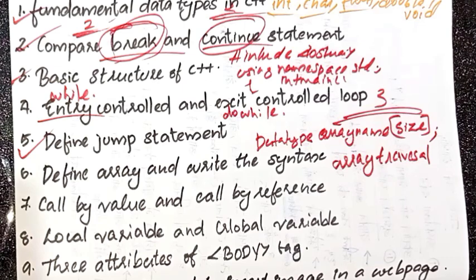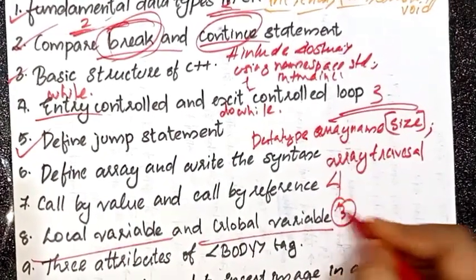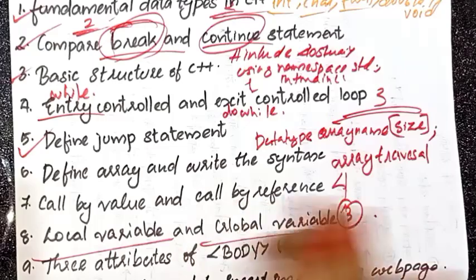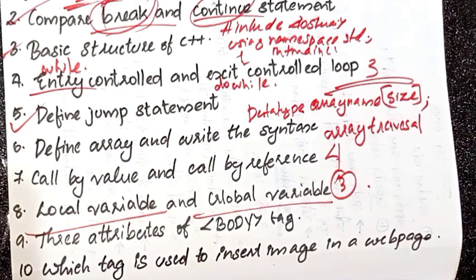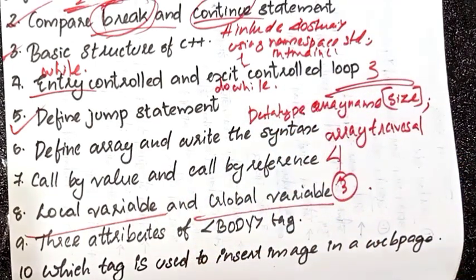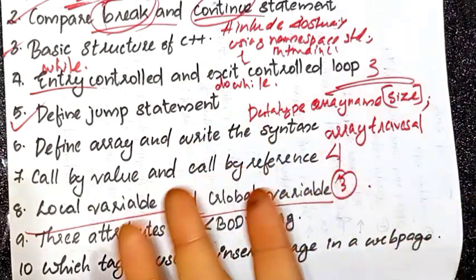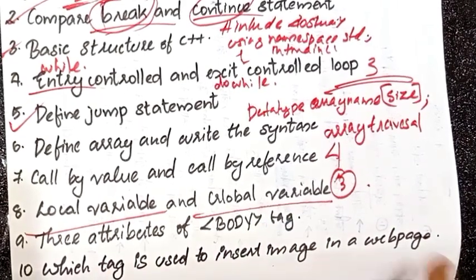Local variable and global variable — three important, two important. Dynamic web page and static web page — also important. Next question: three attributes of body tag. Body tag three attributes: bgcolor, text, bold. Body tag attributes. Then insert image tag.